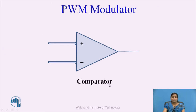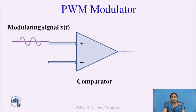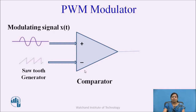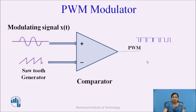Now, let us see the PWM modulator block diagram. In this modulator, a comparator is used. One input to the comparator is the modulating signal x(t), or continuous time signal which is to be modulated, and the other input is from a sawtooth generator. The comparator compares both inputs and gives the output — that is the variable width train of pulses, which is the pulse width modulated signal.